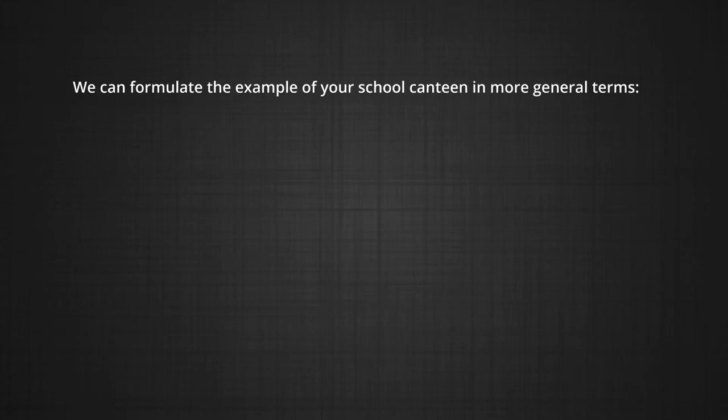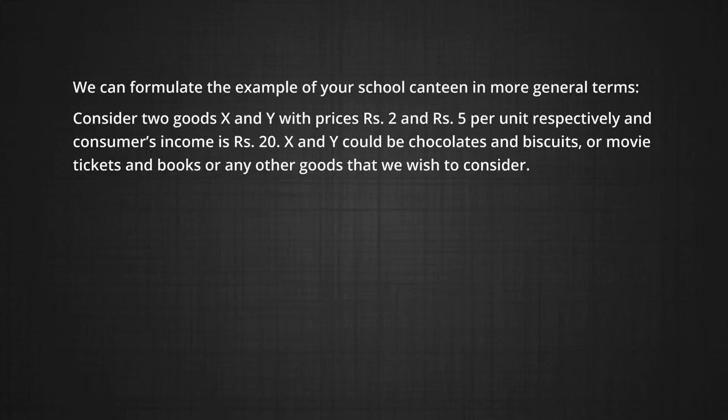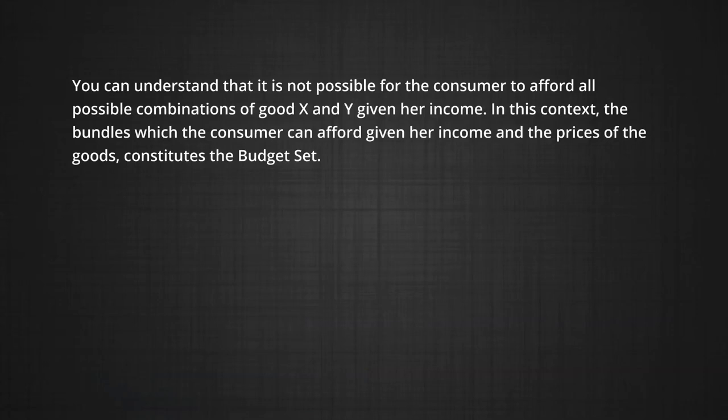We can formulate the example of your school canteen in more general terms. Consider two goods, X and Y, with prices rupees 2 and rupees 5 per unit respectively, and a consumer's income of rupees 20. X and Y could be chocolates and biscuits, or movie tickets and books, or any other goods we wish to consider. We pick two goods for discussion because that allows us to represent the problem on a two-dimensional diagram. The logic can be easily extended to discussion of many goods. You can understand that it is not possible for a consumer to afford all combinations of goods X and Y, given her income.